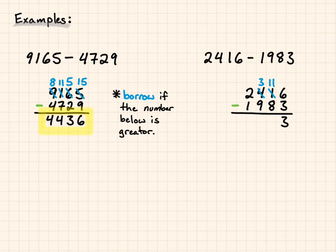9 is greater than 3. So I need to borrow from my place value to the left. 2 becomes a 1. And the 3 becomes a 13. Now 13 minus 9 gives me 4. And 1 minus 1 gives me 0. So I end up with 433 as my answer.